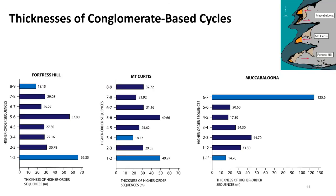We noticed a remarkable periodicity in the thicknesses of the sequences. Shown here are the three incisions with sequence numbers on the y-axis and sequence thickness on the x-axis. At Fortress Hill — the first incision going downstream to Makabaluna — there is a roughly 30-meter thickness for the sequences, with a doubling in sequence thickness at levels five to six. However, as we go downstream to Makabaluna, the sequence thickness becomes much more sporadic, which we might expect for a fluvial system progressing downstream to the north.